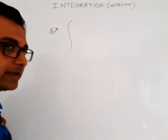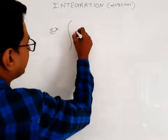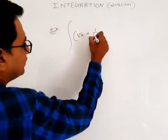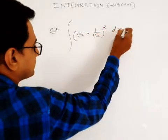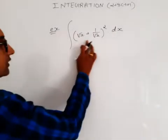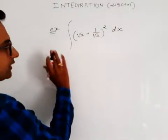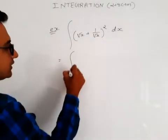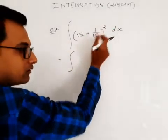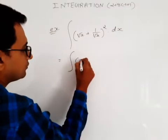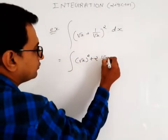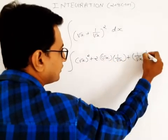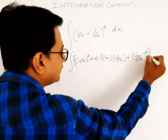Suppose for example we have to integrate: root x plus 1 upon root x, whole square, into dx. So first of all, in integration there is a rule — if there is a plus, we do term by term integration. So we first expand: (a + b)² = a² + 2ab + b². So: root x squared plus 2 times root x times 1 upon root x plus 1 upon root x squared, into dx.